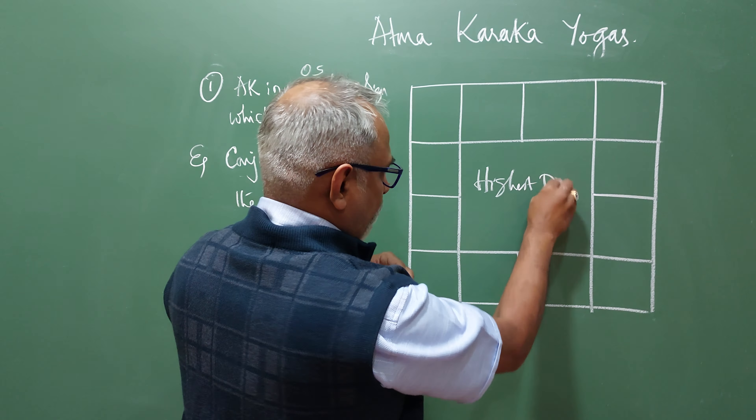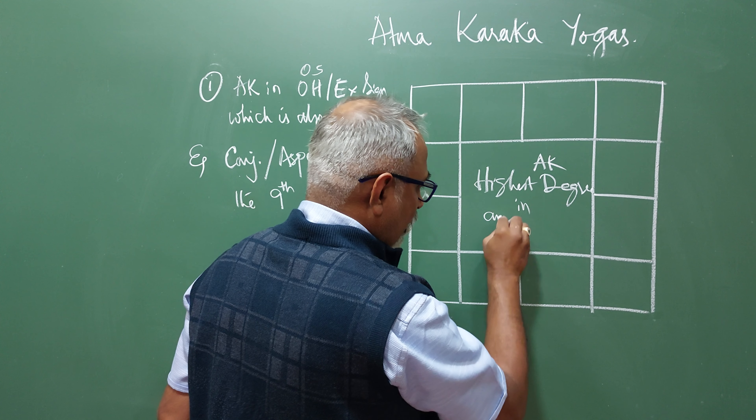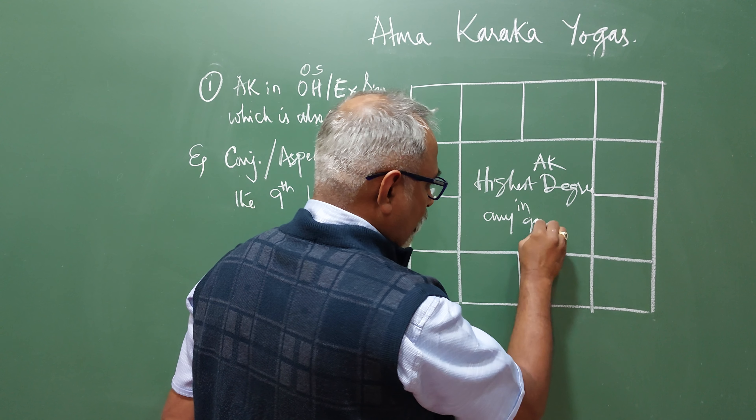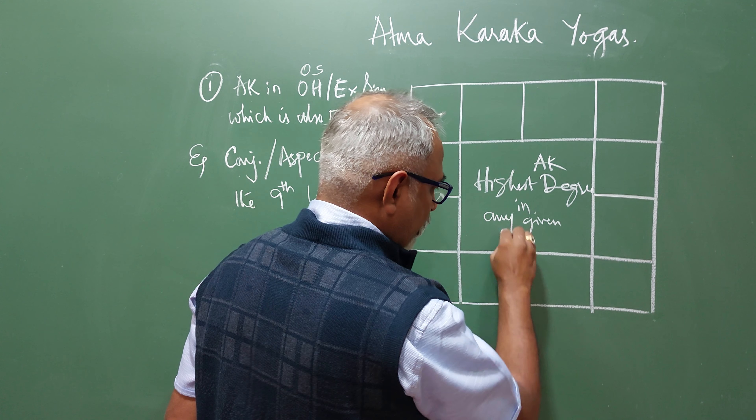Hello, this is Sheshachalam from Ashwagate, Mysore. Today we are going through Atmakaraka Yogas. This is one of the Yogas of the Atmakaraka which gives extraordinary placement of a person in good government positions, highly influential in the government, having a lot of influential power with the government or being in the government itself.